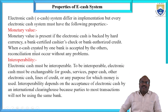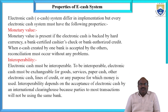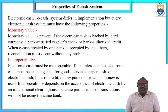Going to the other important topic: interoperability. What is meant by interoperability? The electronic e-cash must be interoperable. To be interoperable, electronic cash must be exchangeable for both services, paper cash, other electronic e-cash, lines of trade, or any purpose for which money is used. Interoperability depends on the acceptance of the electronic e-cash by an international clearinghouse, because parties to the transaction will not be using the same systems. The most important properties are Monetary Value and interoperability.